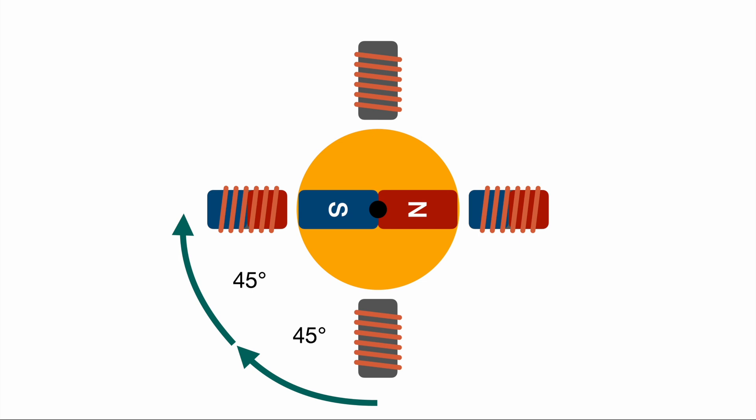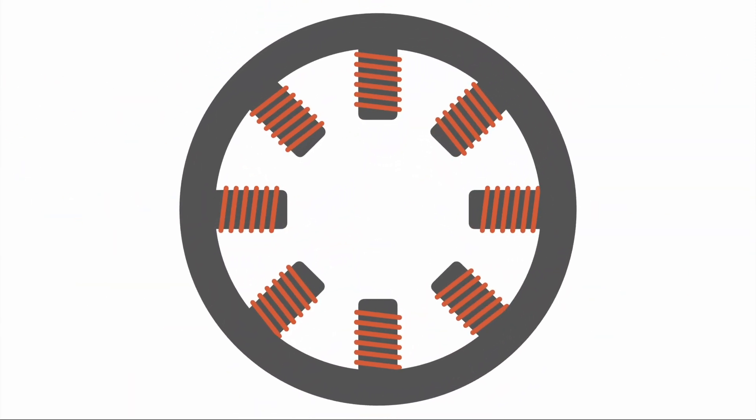If you're looking for more precision or smaller step sizes, so higher step resolution, you can switch to a variable reluctance stepper motor and that's looking very different from what we saw just now. Again we have a bunch of solenoids arranged outside in the stator and in the middle in the rotor we have something very different now.